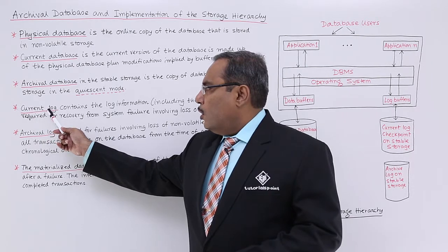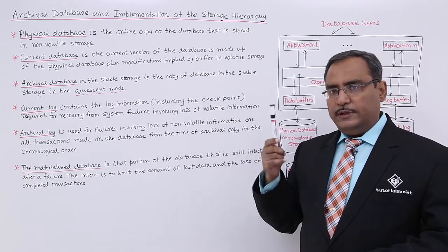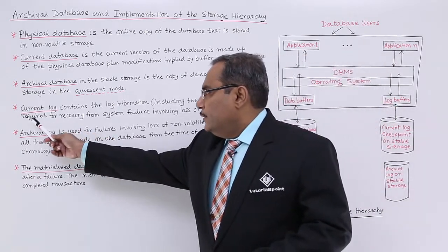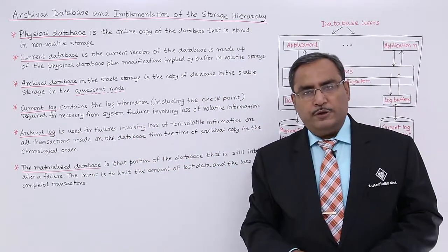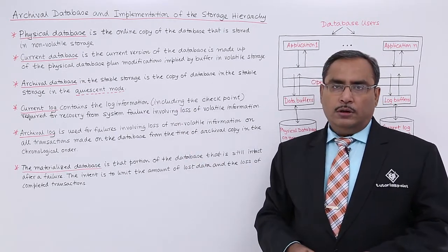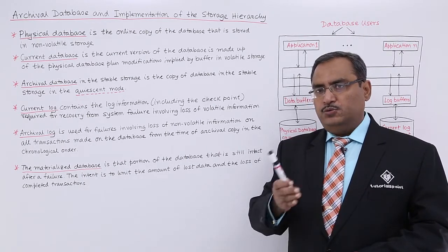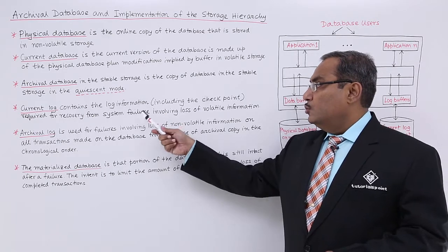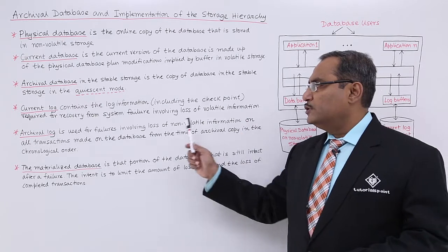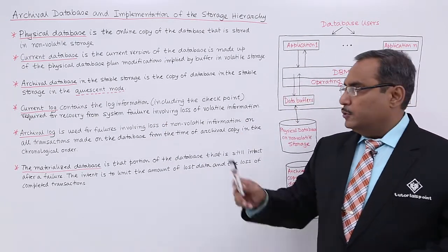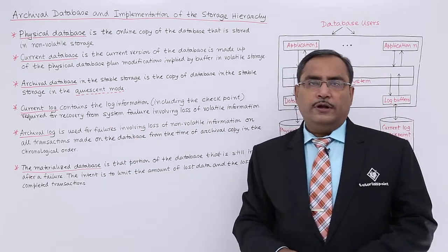The current log contains the log information including the checkpoint — we have discussed the checkpoint in an earlier video. The current log is required for recovery from system failure involving loss of volatile information. Whenever a system failure takes place involving loss of volatile information, this current log will be required. So the current log contains log information including the checkpoint, required for system recovery.